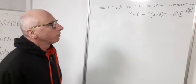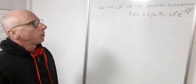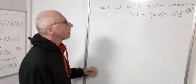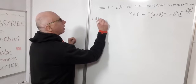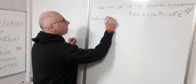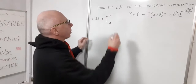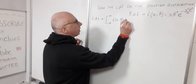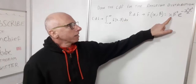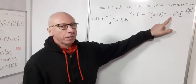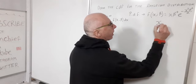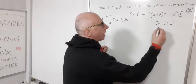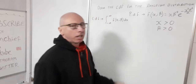This is quite a complicated looking function. For the cumulative distribution function, what we have to do is integrate this from negative infinity to infinity. The CDF is found by integrating from negative infinity to infinity of our function f(X; β) with regards to X. The random variable for the Rayleigh distribution is always greater than zero and goes to infinity, and the same applies to beta, our scale parameter.